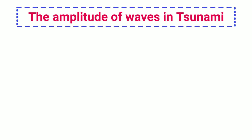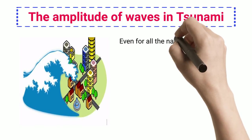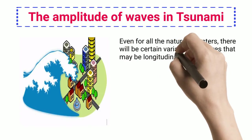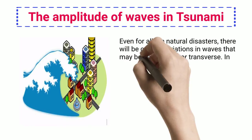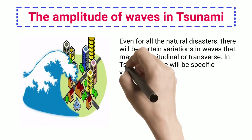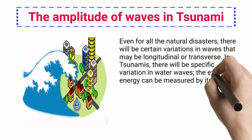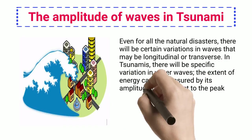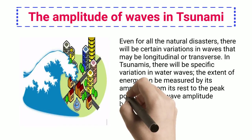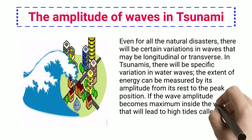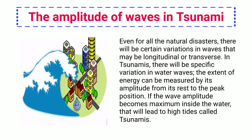The Amplitude of Waves in Tsunami: Even for all natural disasters, there will be certain variations in waves that may be longitudinal or transverse. In tsunamis, there will be specific variation in water waves; the extent of energy can be measured by its amplitude from its rest to the peak position. If the wave amplitude becomes maximum inside the water, that will lead to high tides called tsunamis.